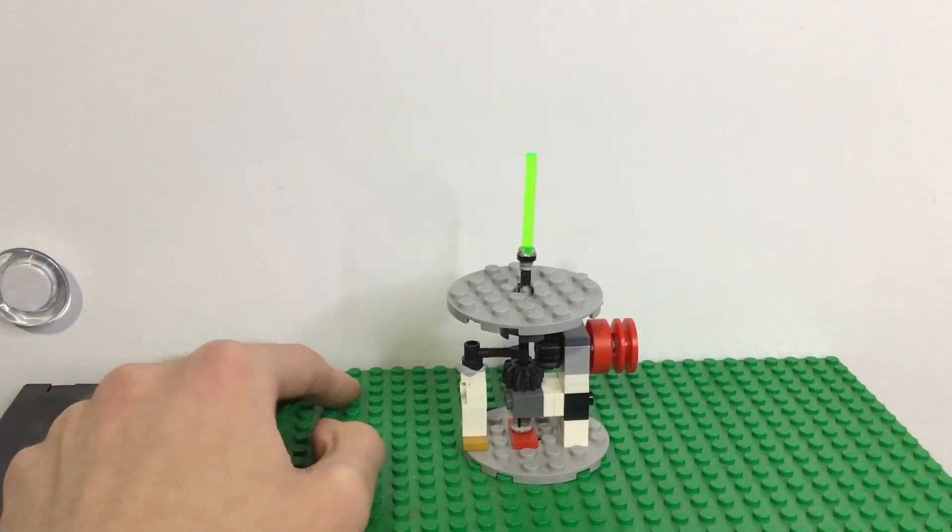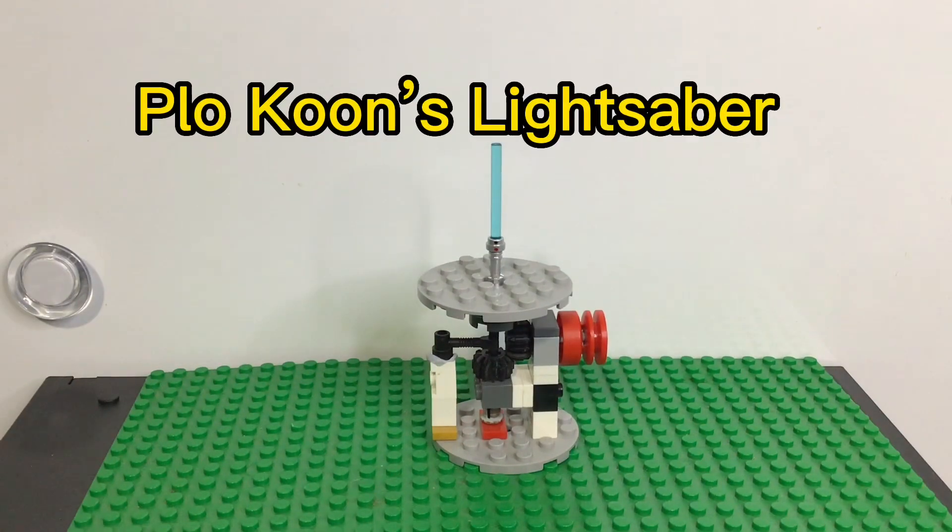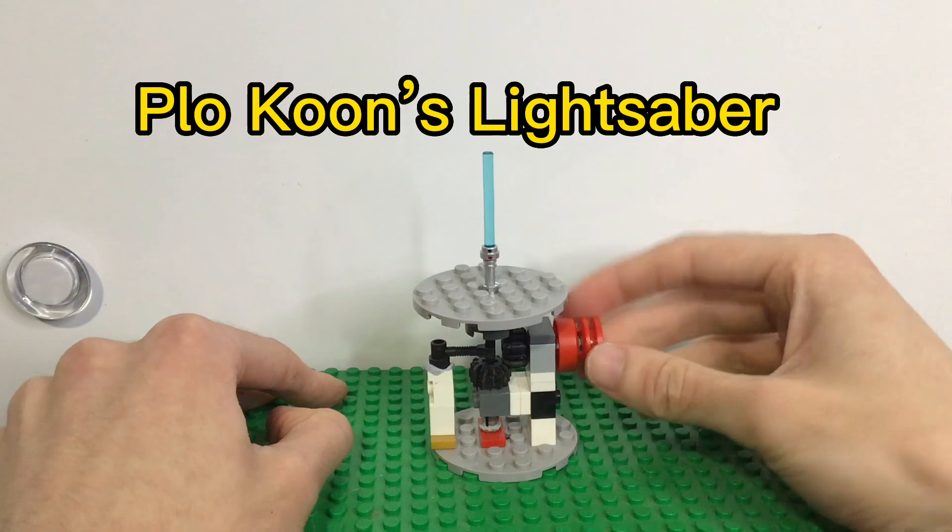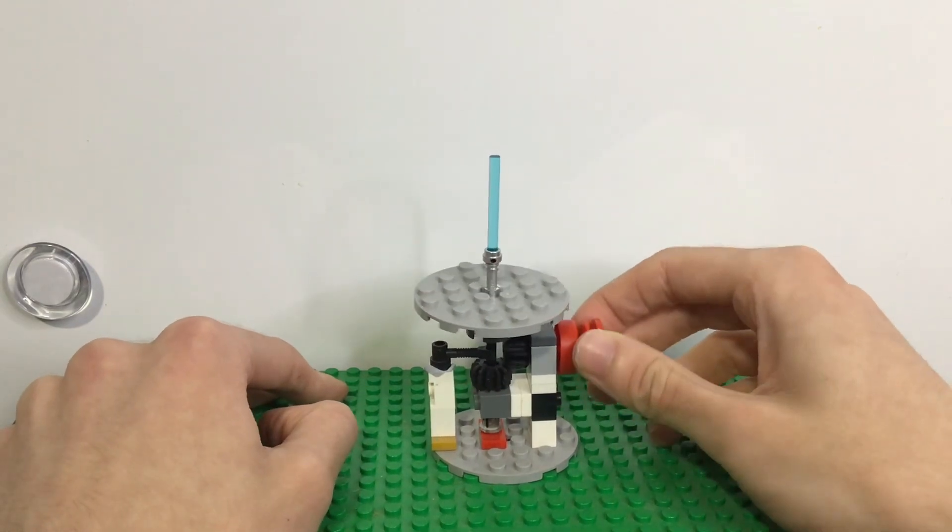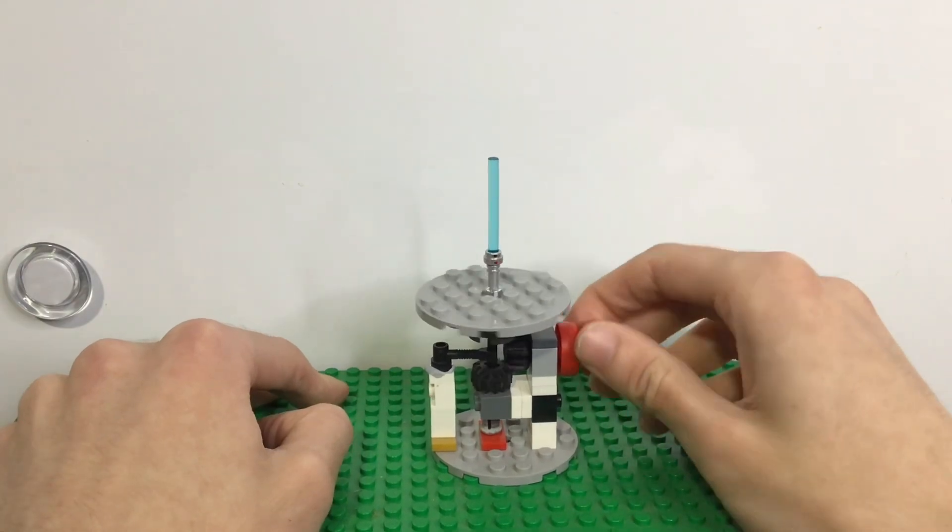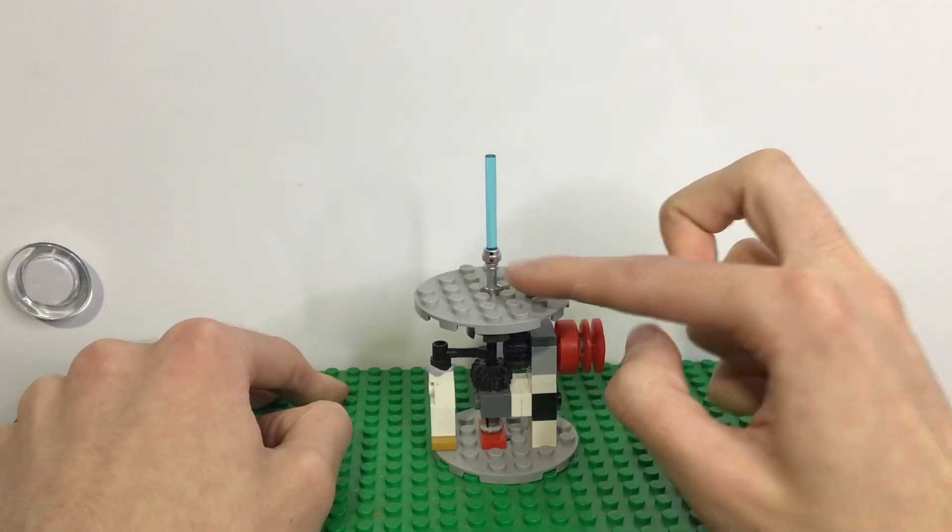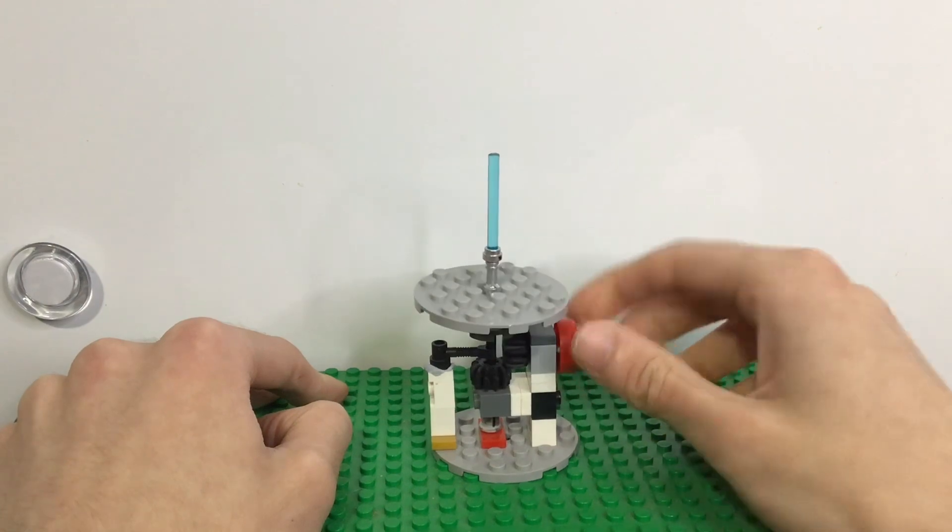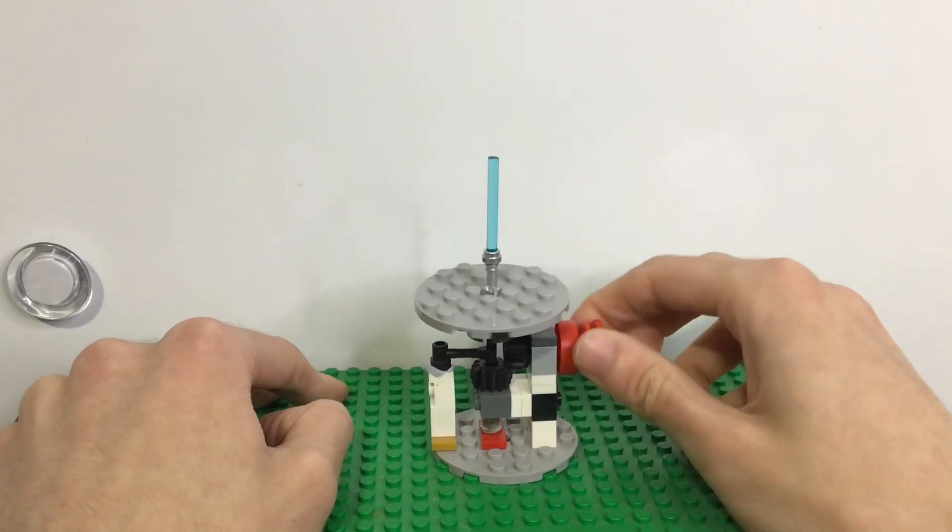Next up we have Plo Koon's lightsaber. This one was really easy - I basically just had to add a red button and a black button. There's a red button with a black dot above it, and then on the other side it's just a black dot. But it still looks really nice.